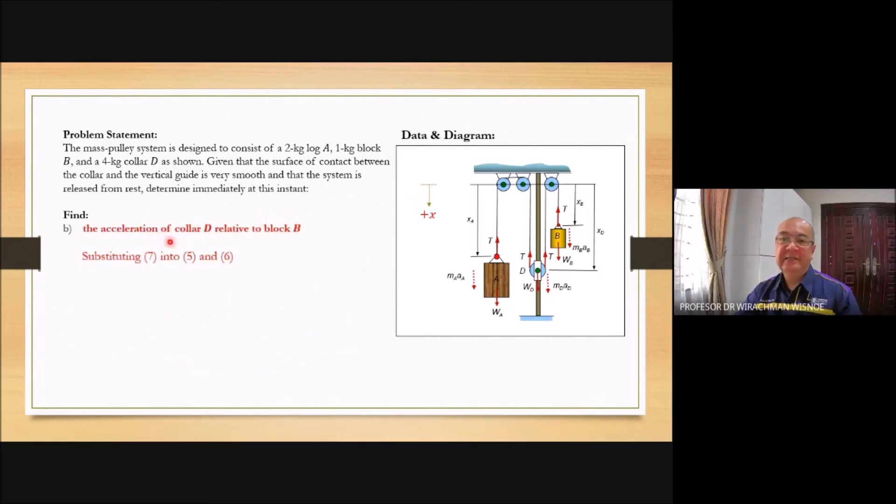Next is acceleration of collar D relative to block B. When you find the word relative, it means you calculate each one first and then later you subtract. The vector substraction. First we need to obtain AB and AD. If we have positive direction, it means going down. If negative, it means going up. So later when you have vector notation, if positive it means you put I. If negative, you put negative I.